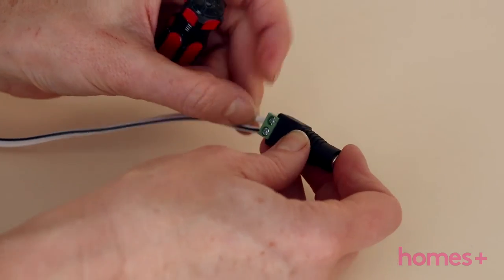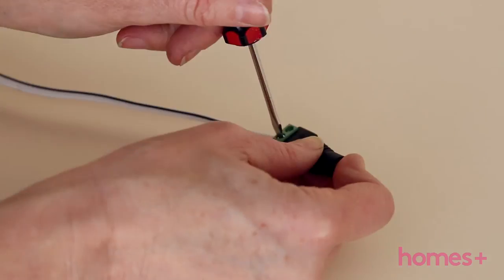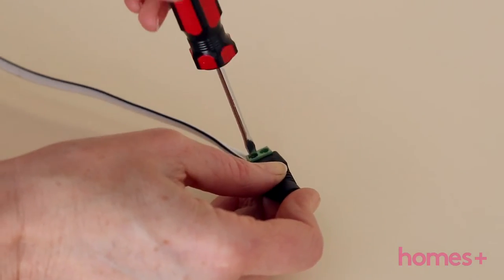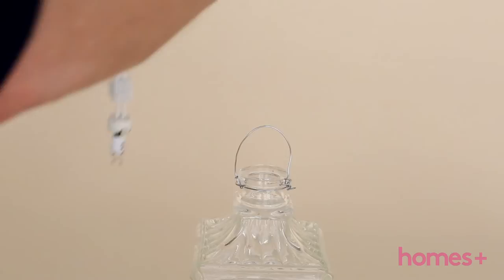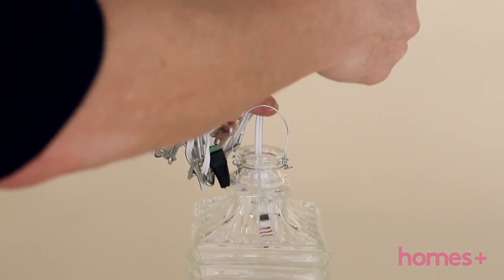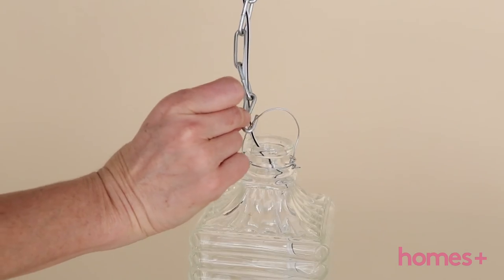Connect the electrical cord to the power socket. Insert the LED light in the bottle and hook the end link to the neck of the bottle.